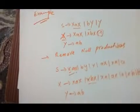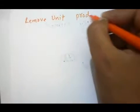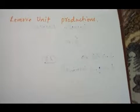The next step is to remove unit productions. What are unit productions? Productions which contain only one variable. The production which contains only a single unit variable — we need to replace that variable with the terminal. Starting with step 2.